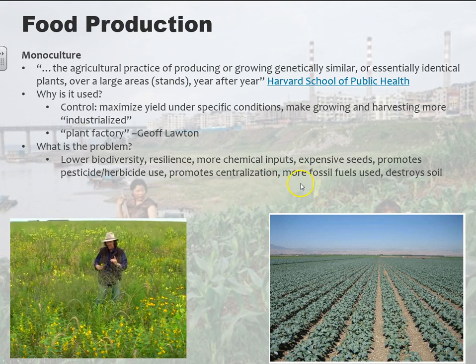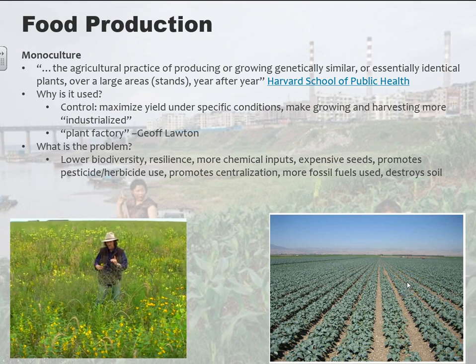Promoting centralization is an issue. With monoculture you have more fossil fuels through the fertilizers you're using, the pesticides and herbicides, and also just the machine-based farming. It also destroys soil. One of the problems with non-organic monoculture — and to a lesser degree organic monoculture — is that as you use fertilizers on soil, it actually reduces the soil's ability to replenish itself naturally, so you end up needing to use more fertilizers over time. There are a lot of issues with monoculture.